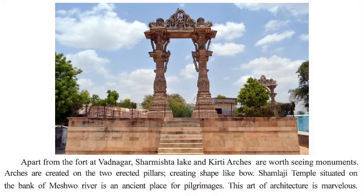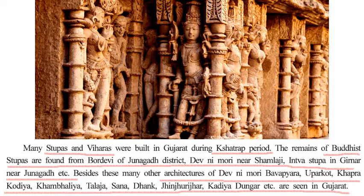The Samaraji temple situated on the banks of the Meshwa River is an ancient pilgrimage site with beautiful architecture. Many stupas and viharas were built during the Kshatrapa period. Remains of Buddhist stupas are found in Bord Devi of Junagadh district, Devnimori near Samaraji, and stupas in Girnar near Junagadh. Other architectures of Devnimori, Bava Pyara caves, Uparkot, Khapra Kodia caves, Khambalida caves, and Taraja can be seen in Gujarat. These were explained in detail in chapter three.